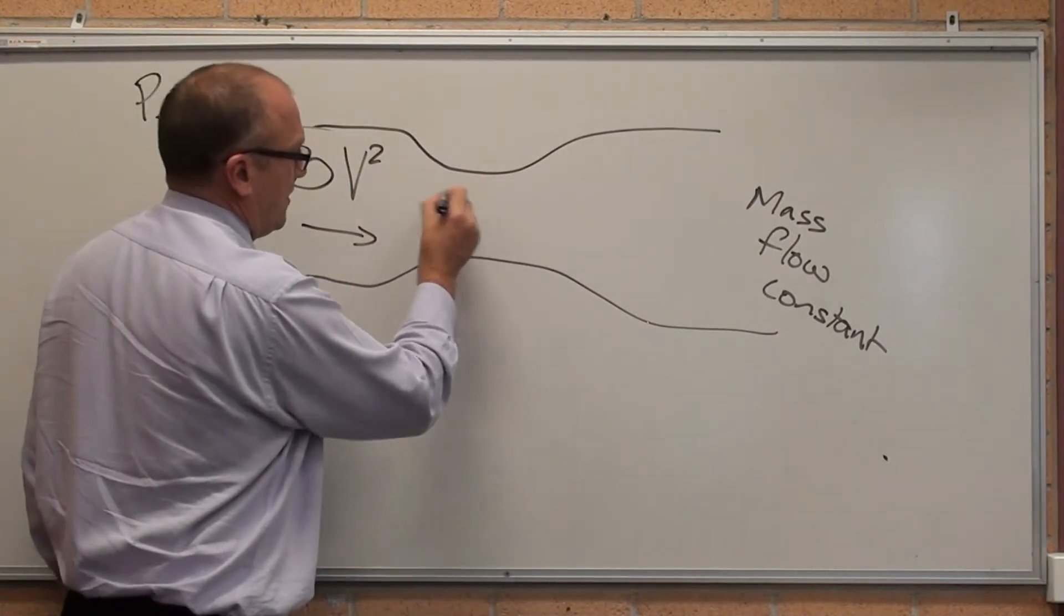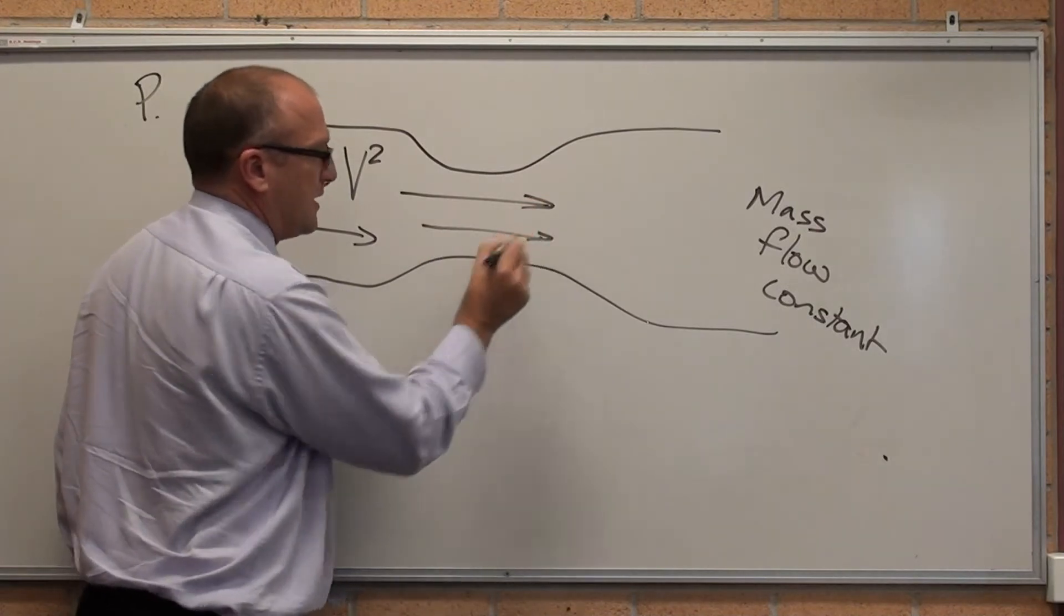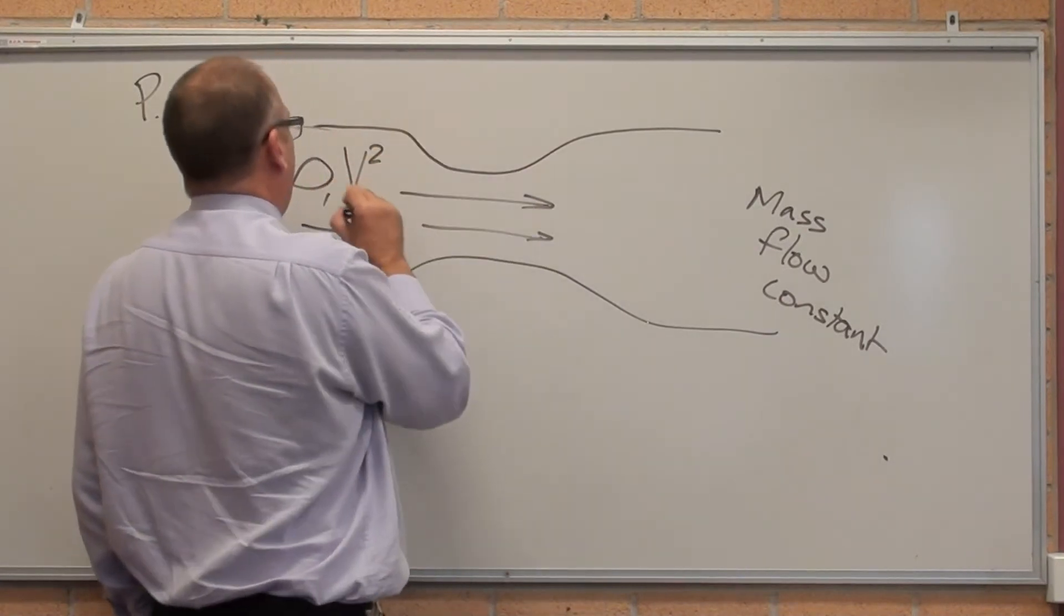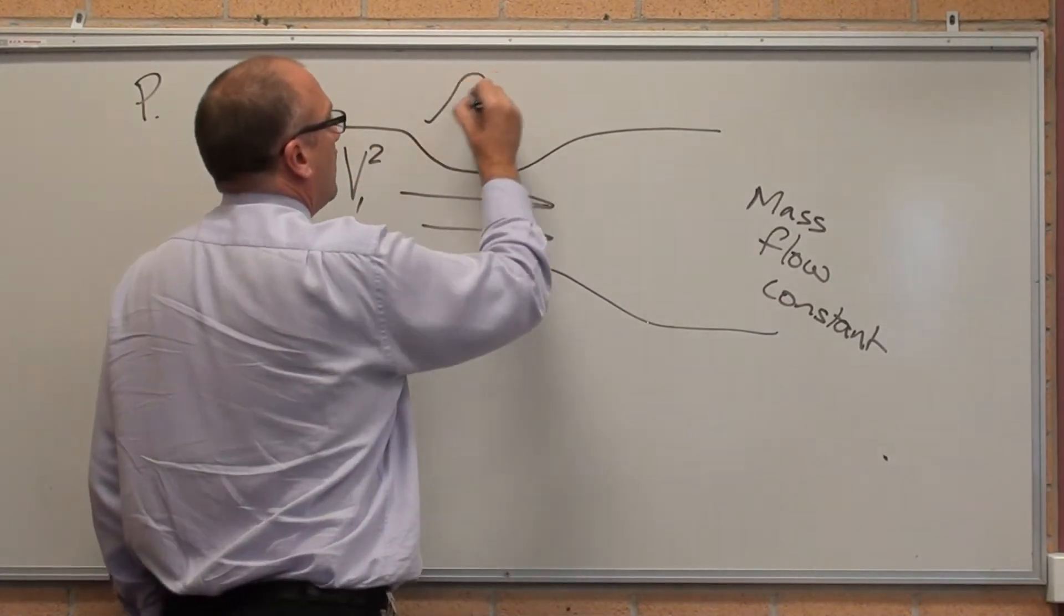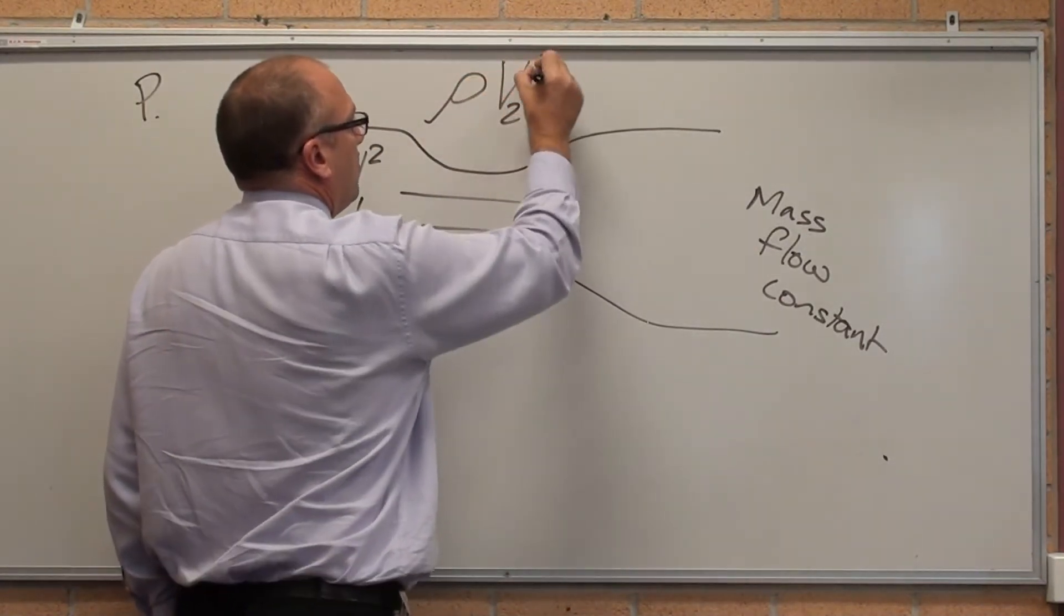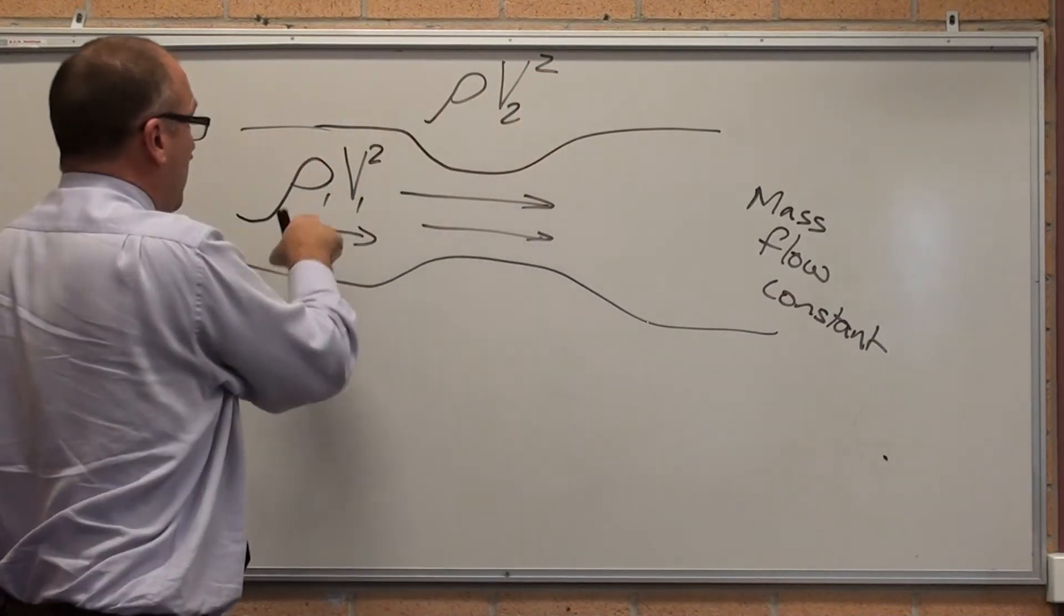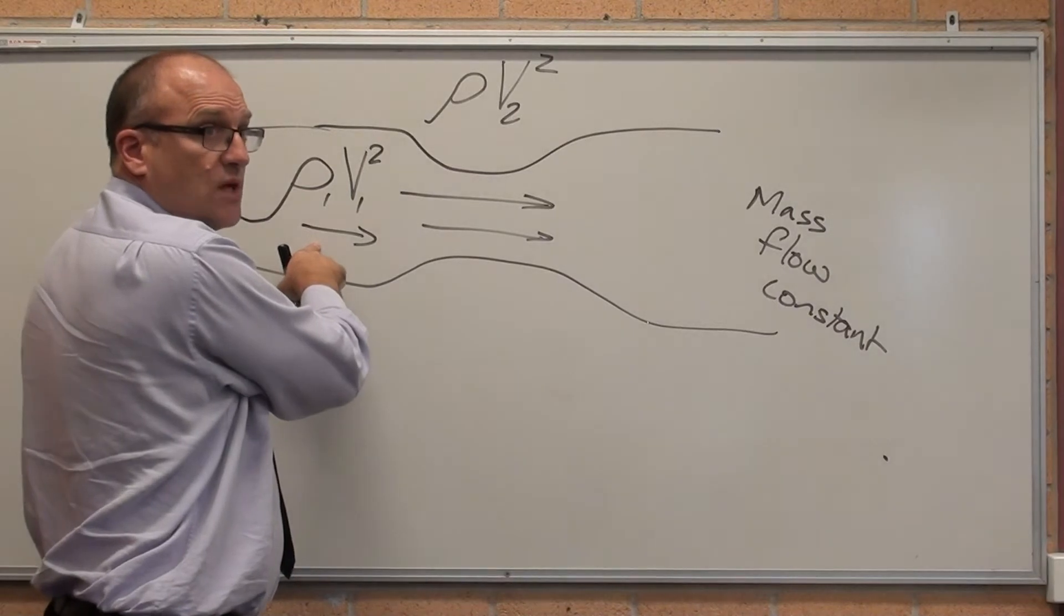In here where the venturi narrows, it's got to be travelling quicker to get the same mass flow through. Yes? Rho 1, velocity 1. The V2 squared times the density at that point is the same as this one.